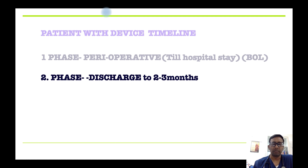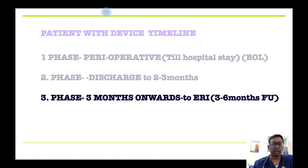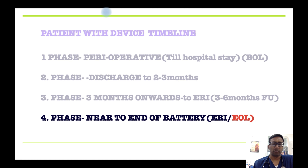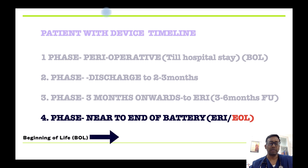The first phase is the perioperative phase during hospital stay. The second phase is from discharge to the first two to three months, when the external wound heals and the leads stabilize in the heart. The third phase is from three months onward to the ERI — lasting eight to ten years for pacemakers, and five to eight years for ICD/CRT depending on battery longevity. The fourth phase is when the battery reaches ERI, or elective replacement indicator.